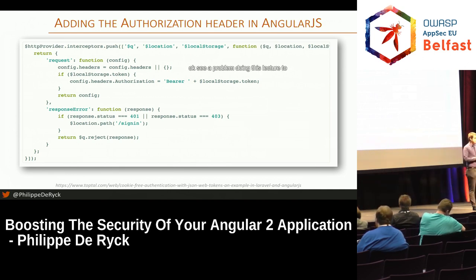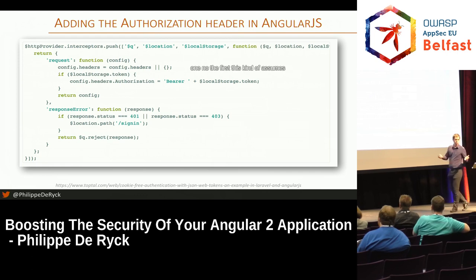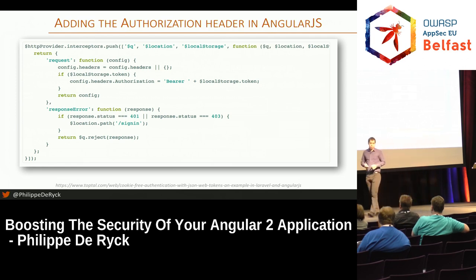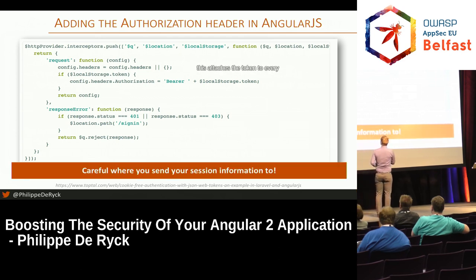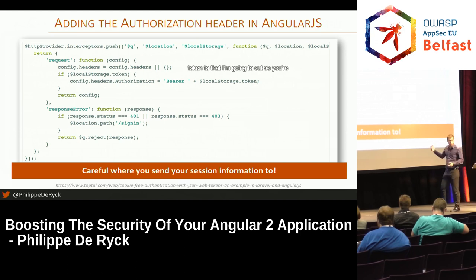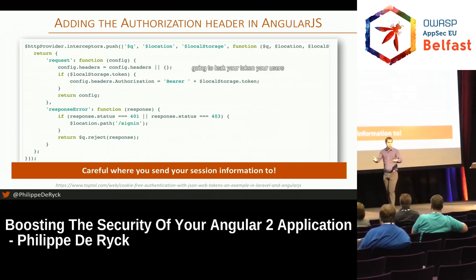Can you see a problem with this approach? First: it assumes you only contact your own API. This attaches the token to every outgoing request. As soon as you use a third-party API for some features, you're going to attach your token to those requests as well — leaking your user's token to all third-party APIs you contact.